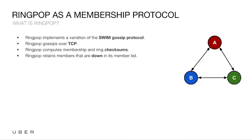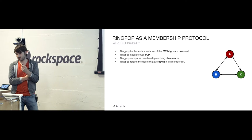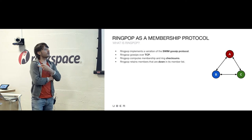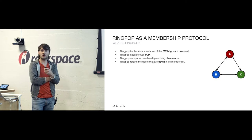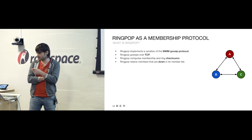RingPop as a membership protocol: it implements a variation of the SWIM gossip protocol. If you're not familiar with gossip, it's also called infection-style dissemination of membership updates. Little snippets of information about the membership list are disseminated across the many members, and the particular implementation we use is called SWIM, developed by a few Cornell students. If you're familiar with HashiCorp's product called Serf, they also implement a variation with extensions onto SWIM.